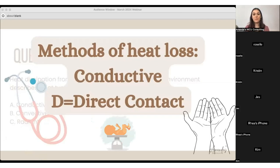So first is conductive. I always think about that D in conductive equals direct contact. That's when you go to the doctor and they put the cold stethoscope on you—that stethoscope is stealing your heat directly. You put a baby on a scale and there's nothing to protect that baby from the cold, it's going to steal its heat directly. If you have really cold hands like I do and you touch that baby, you are stealing their heat directly through conductive heat loss. So think conductive with a D equals direct contact.